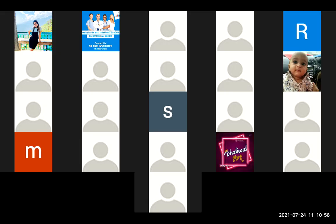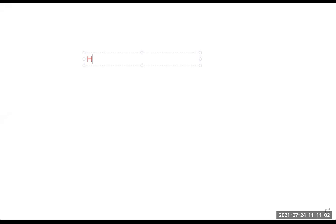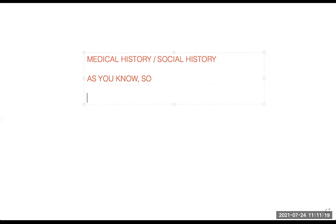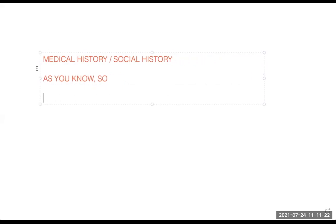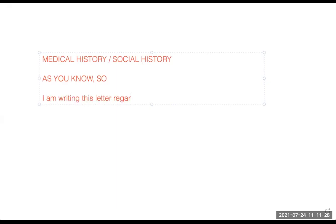We have to justify our things. The first thing is writing a letter to the patient's GP. So the patient's GP letter is written. If I am a patient and the GP is my general practitioner — I am writing this letter regarding one of your patients.